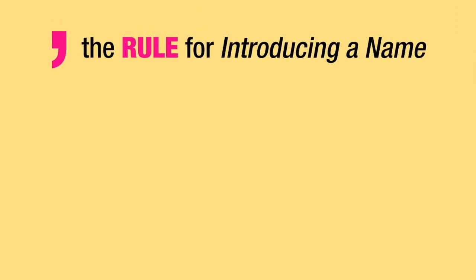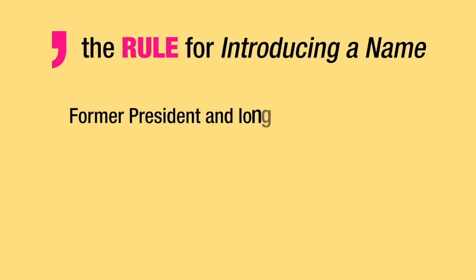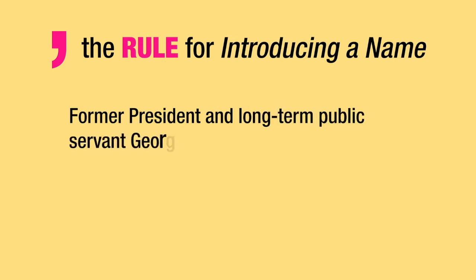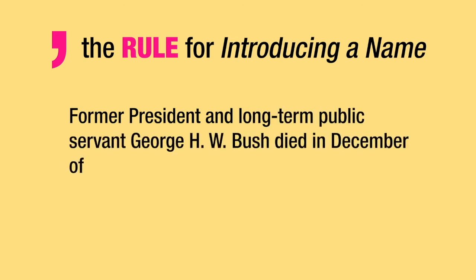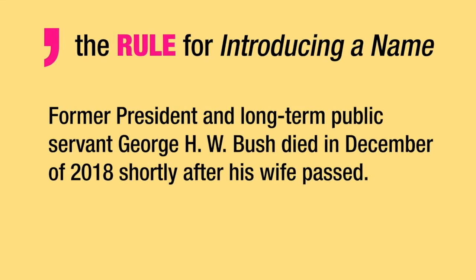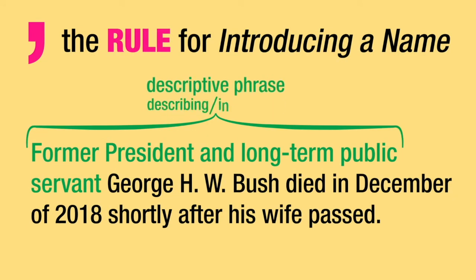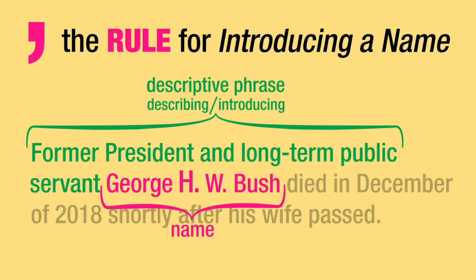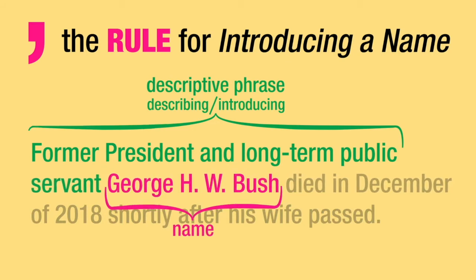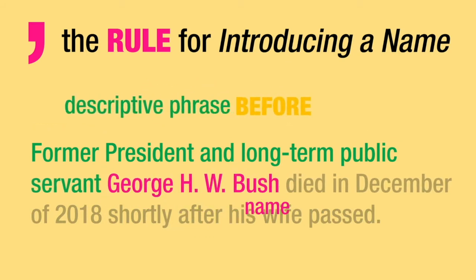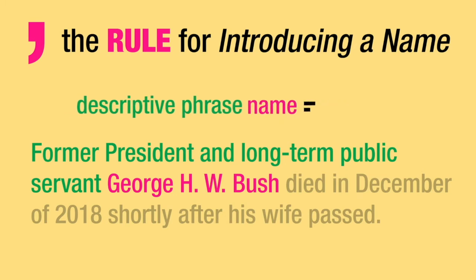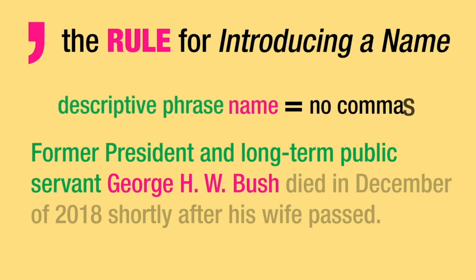Consider the sentence: 'Former President and Long-Term Public Servant George H. W. Bush died in December of 2018, shortly after his wife passed.' This is the descriptive phrase describing — introducing, if you will — this person, George H. W. Bush. When that description comes before the name, you do not need any commas.